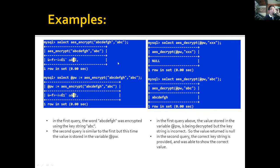Using the stored variable @PW, we can now demonstrate decryption. First, we attempt AES_DECRYPT with a different key — since the key is incorrect, the function returns null, indicating an invalid key string. In the second example, we use the correct key string, and this time we are able to decrypt and display the original plain text value. That's an example of encryption and decryption using AES_ENCRYPT and AES_DECRYPT.